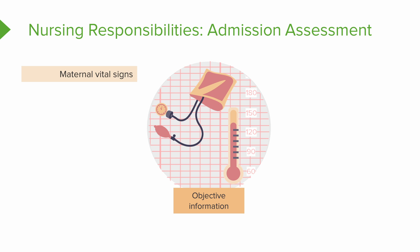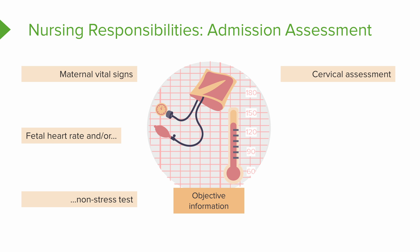Now let's look at the objective information — the assessments and interventions we make as nurses during the admission process. Of course we're going to take maternal vital signs to know if the patient is stable: blood pressure, temperature. That lets us know if there are signs of infection or other problems. We'll also check fetal heart rate to make sure the fetus is doing okay. We're going to check the cervix using an internal exam to figure out how dilated the cervix might be, and we're going to get some labs — hemoglobin, hematocrit, platelets, white count.